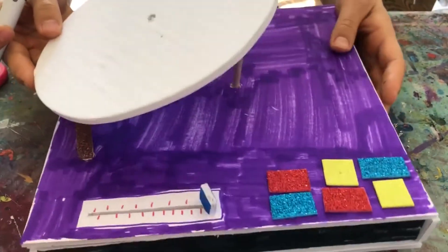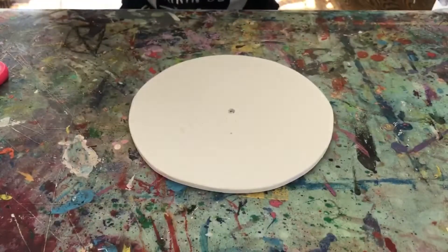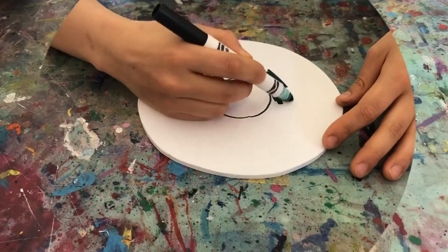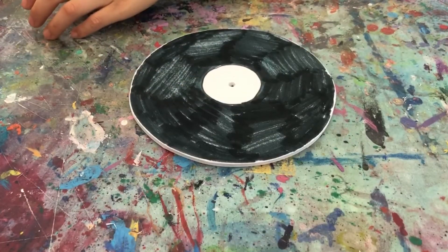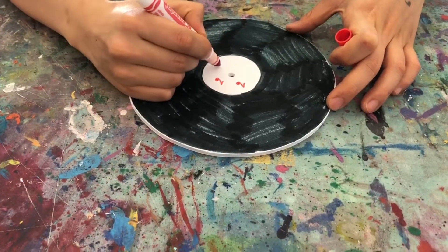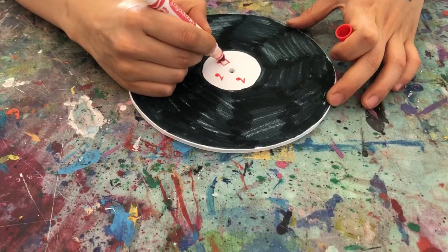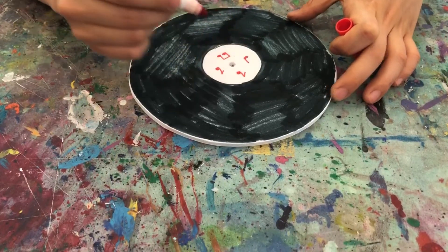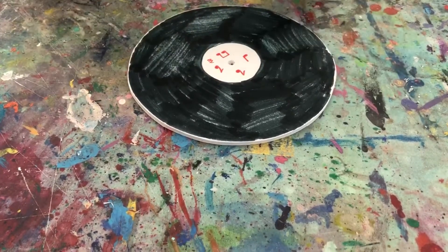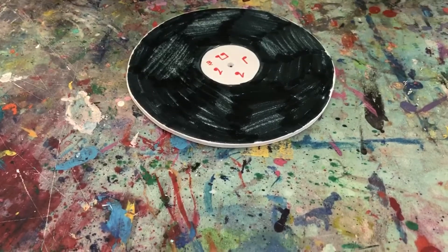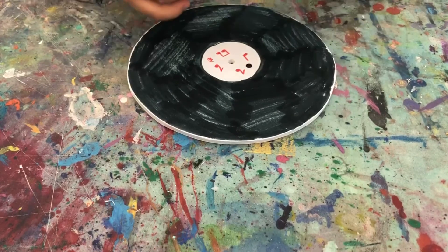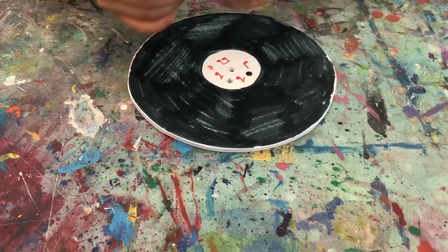Once you're done decorating your DJ controller with the buttons, you can start coloring and decorating your vinyl discs. This kit comes with two of those. You can design it for your favorite singer, your favorite songs, or it could be your very own album that you're gonna release one day. You can also feel free to use some of the gemstone stickers to decorate your vinyl discs.